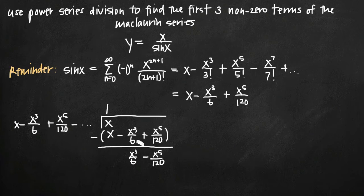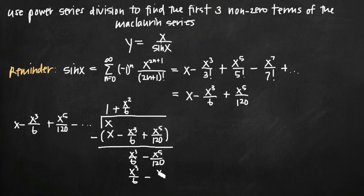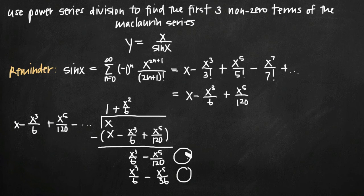Now we need to figure out what we need to multiply by x in order to get x cubed over 6. We would have to multiply by x squared over 6, so we put that up top and multiply through. We get x cubed over 6. Then x squared over 6 times negative x cubed over 6 is negative x to the fifth over 36. We could multiply by x to the fifth over 120, but we'll see if we can get the first three non-zero terms without continuing to expand the power series.